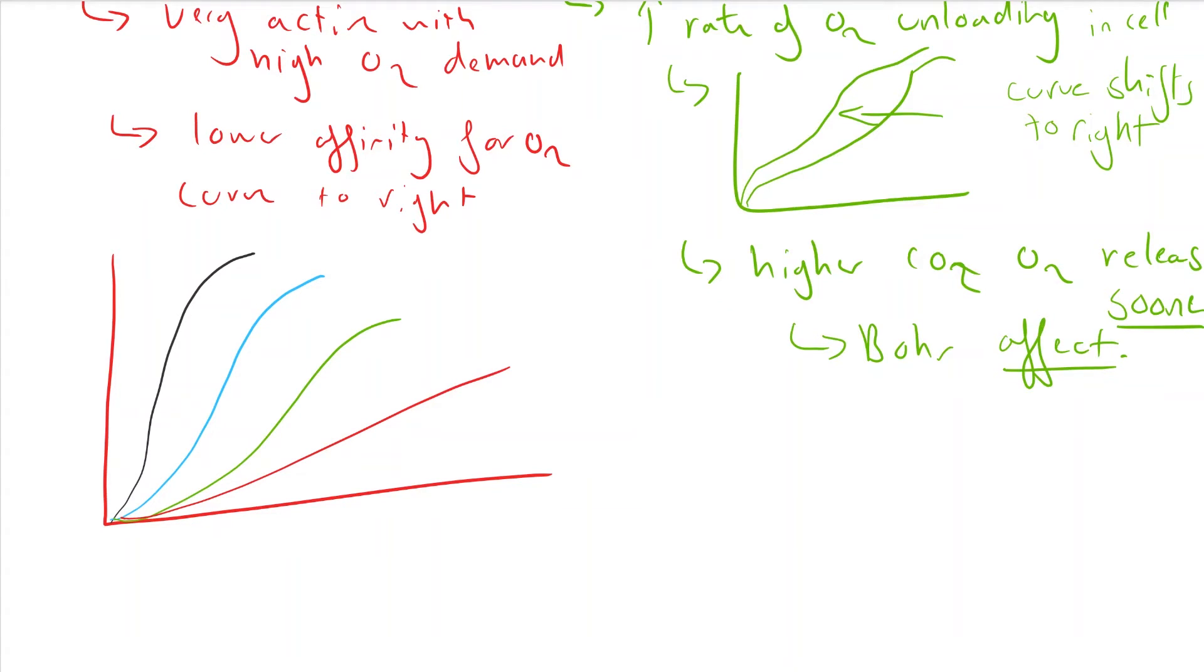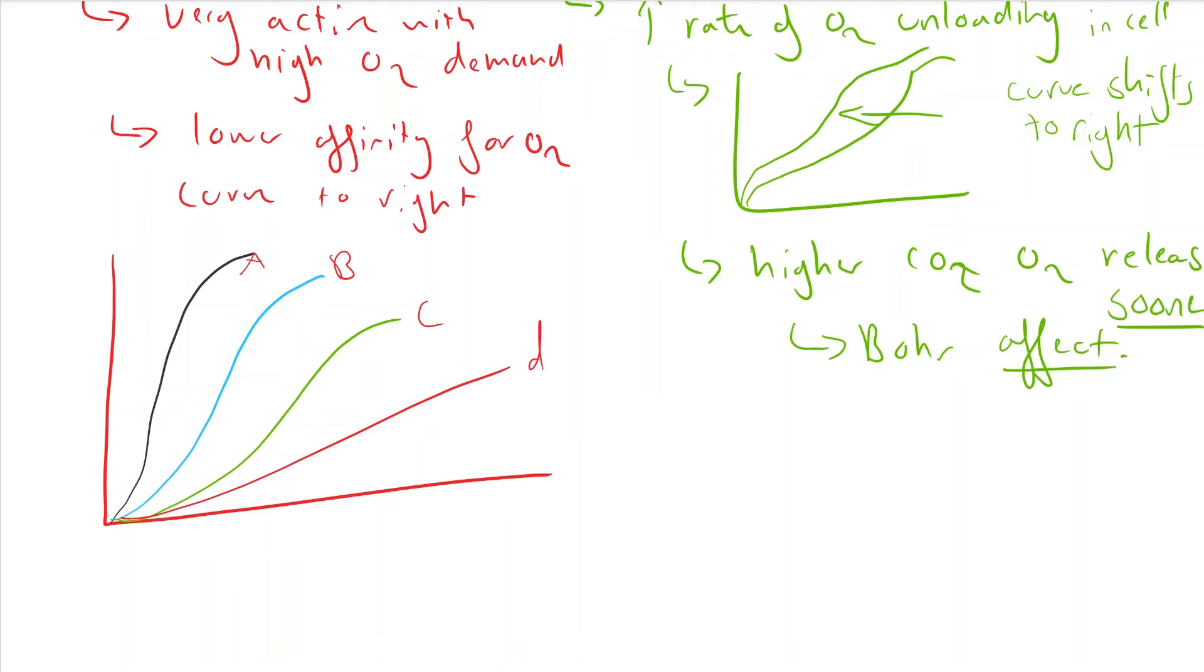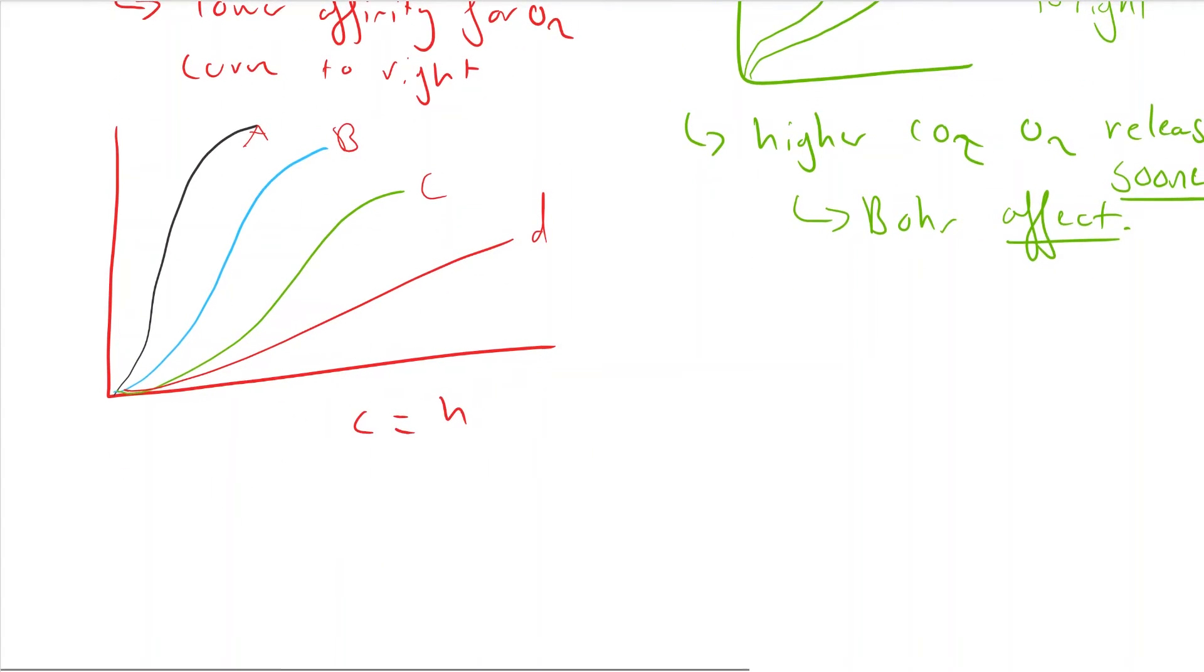So, for example, D is a really active animal, such as a hawk. C is more of a human dissociation curve. B is an animal living in a high altitude where it needs to utilize all the oxygen it can get. And A is an animal living in a low oxygen environment.